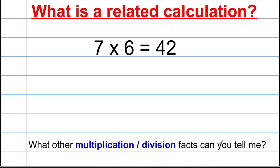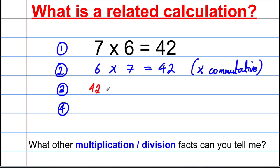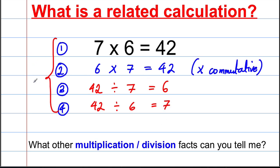What is a related calculation? Well, suppose we have a multiplication fact: 7 multiplied by 6 is 42. There are actually three more associated facts we can deduce using these numbers. We can also say that 6 multiplied by 7 gives us 42, because multiplication is commutative — the order doesn't matter. We can also deduce division facts: 42 divided by 7 gives 6, and 42 divided by 6 gives 7. These four facts are called related calculations. When we know one, we instantly know the other three.